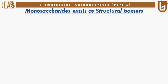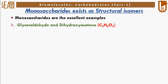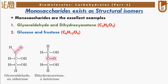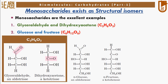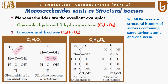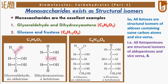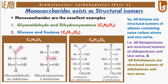Monosaccharides also possess structural isomerism. Glyceraldehyde and dihydroxyacetone both have different structures but the same chemical formula C3H6O3. Similarly, glucose and fructose both have different structures but the same chemical formula C6H12O6. The image on the left shows glyceraldehyde and dihydroxyacetone, visibly different but with the same formula; the image on the right shows glucose and fructose, also visibly different but with the same formula. All ketoses are structural isomers of aldoses containing the same number of carbon atoms — all ketopentoses are structural isomers of aldopentoses, and all ketohexoses are structural isomers of aldohexoses.